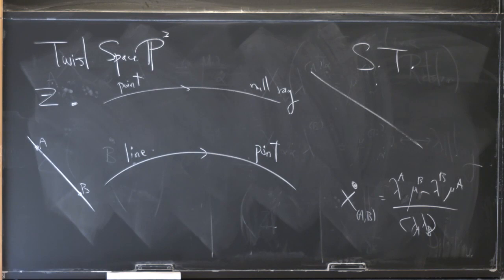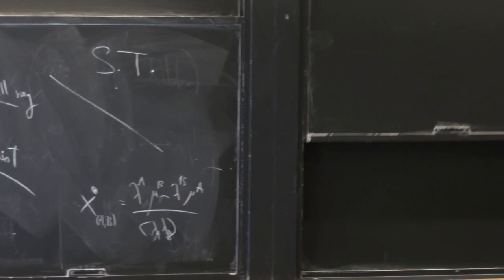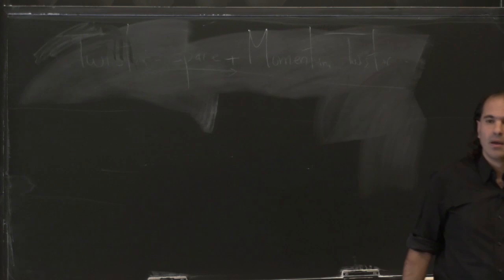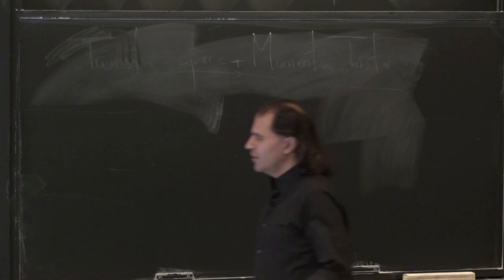So this is our most basic correspondence, summarized again. Here is twistor space, P3. Here is spacetime. A point Z in twistor space is a null ray in spacetime. A line in twistor space goes to a point X in spacetime. And if we're nice enough to provide two points on the line A and B, then we can give a formula: x = (lambda_A · mu_B minus lambda_B · mu_A) over angle-bracket lambda_A lambda_B angle-bracket.